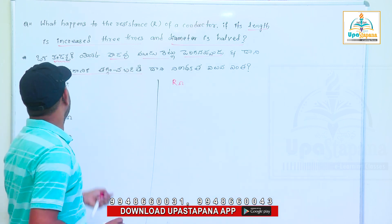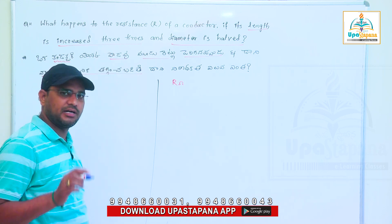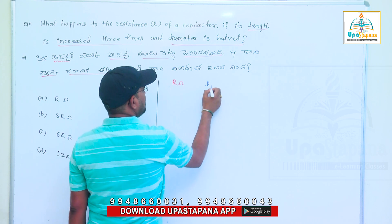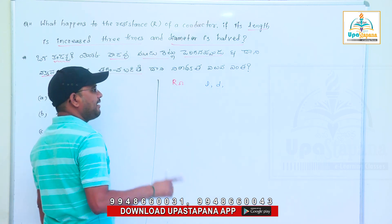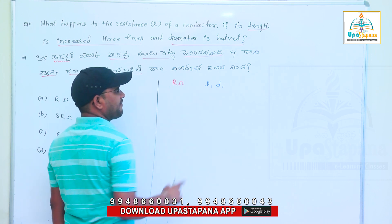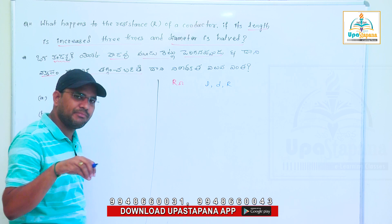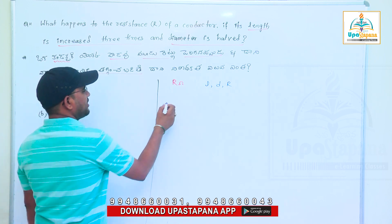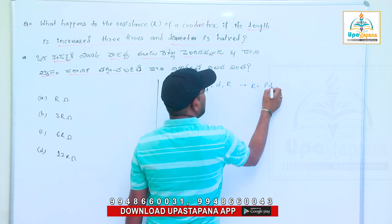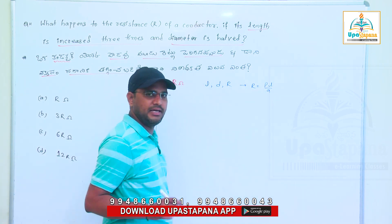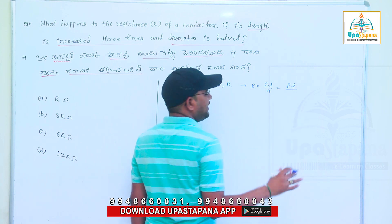The question involves length, diameter, and resistance. The diameter is the length; d is the diameter. The formula relates to this subject. R is equal to rho L by A.